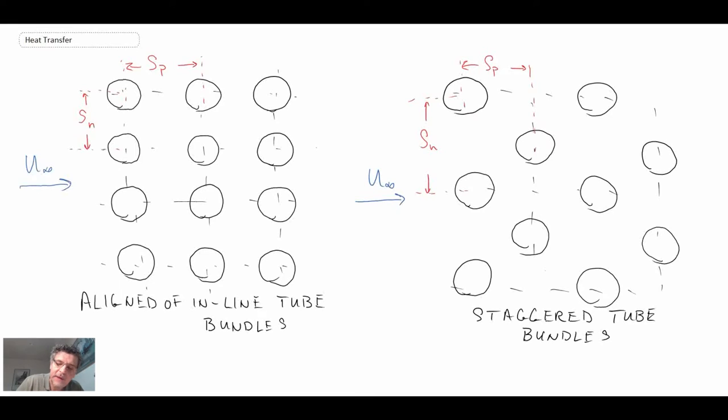Before we look at the flow field, however, let me define a few things. On the diagram I've shown SP and SN. That is basically the spacing in the normal and the parallel to the flow direction. So SN is spacing normal to flow direction and SP is spacing parallel. And in all of these diagrams, we're assuming that the diameter of the tube, each tube in the tube bundle, is D.